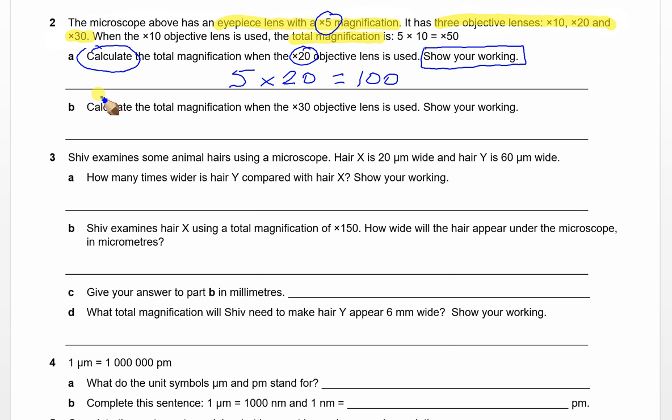For part B, again, we're asked to calculate and show our working. Part B is part of question two. The objective lens is 30, the eyepiece lens is still 5. So now we've got 5 times 30. The total magnification, because the first lens increases the specimen size by 5, magnifies it up by 5 for the image, then 30. Five times 30 is going to give us 150, so we have a total magnification of 150.